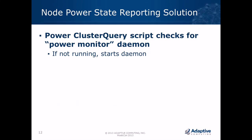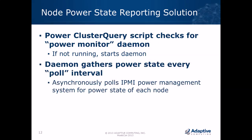When the cluster query script runs, the first thing it does is check whether a power monitor daemon is running. If there isn't one, it starts it up. So the daemon is always running — if it were knocked out of commission, the very next time the cluster query URL runs, the daemon will be restarted automatically. The daemon gathers power state at every poll interval, which is a value you can set independently of the scheduling interval.